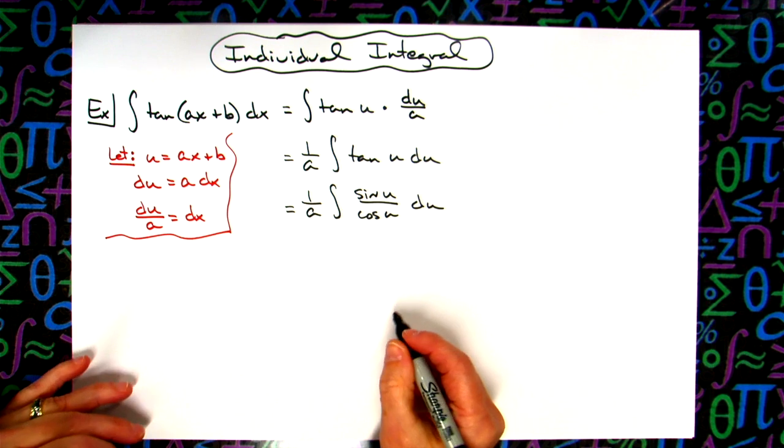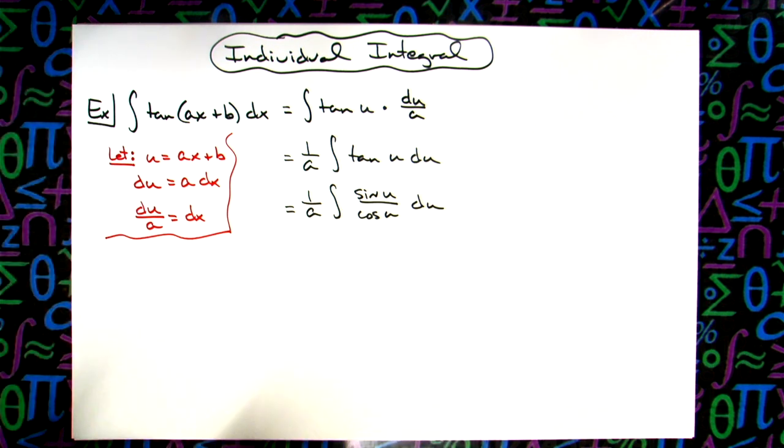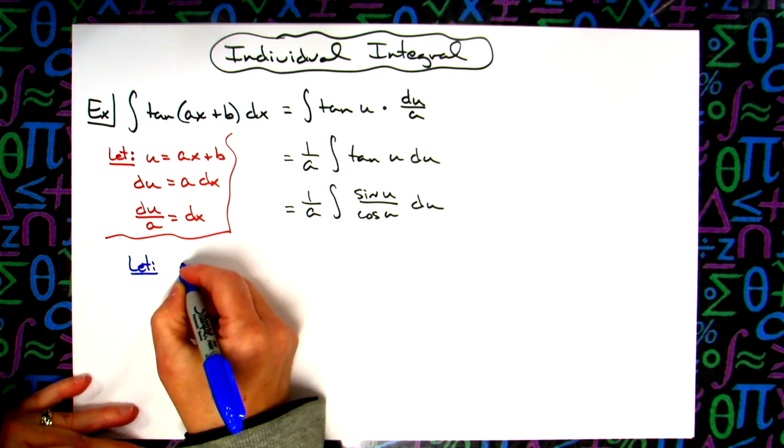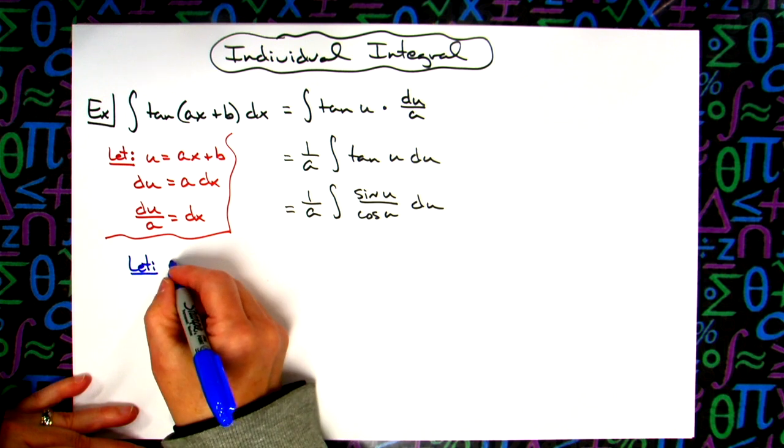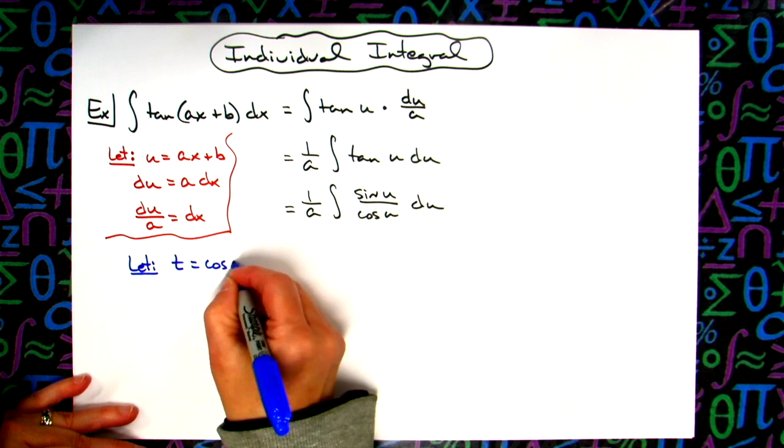Now I'm going to do my second substitution. I'm going to pick another variable, I'll pick t, and we're going to let that be cosine u.